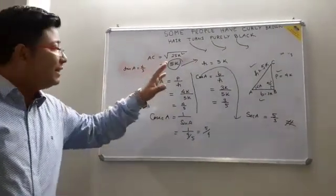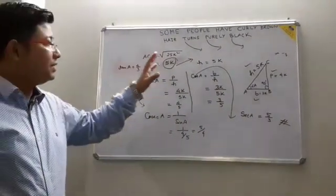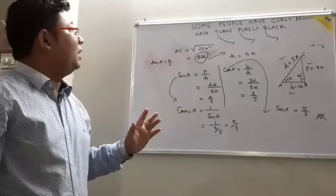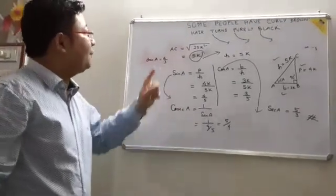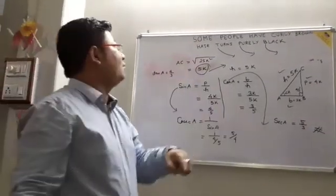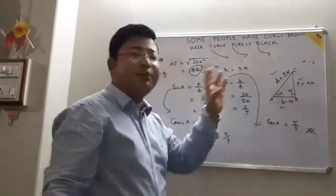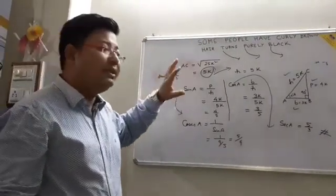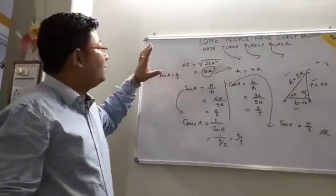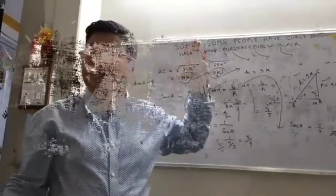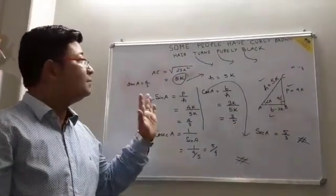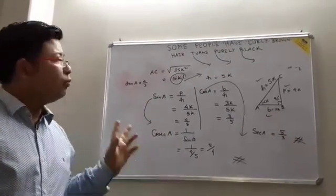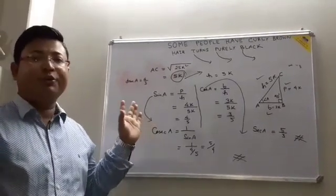So in this way we can find out all the trigonometric ratios using the help of this mnemonic line. Always remember while going through trigonometry, you just need to know: 'Some people have curly brown hair turns purely black.' With the help of this line you can sort out any solution regarding trigonometric ratios. I just taught the basics and I will come up with more classes with more depth and more solutions.